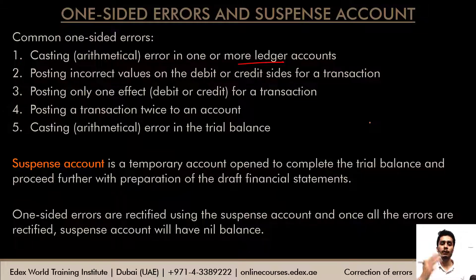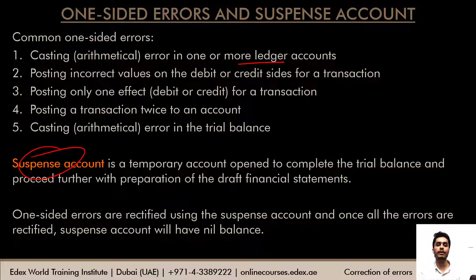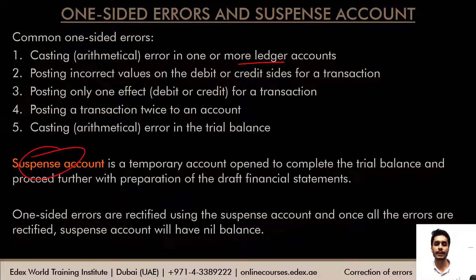When there is a difference in the trial balance, you can't leave it as it is — you need to continue and prepare financial statements. So a suspense account is opened temporarily to balance the trial balance, allowing draft financial statements to be prepared. As and when errors are found they are rectified, and the suspense account is eventually closed. One-sided errors are rectified using the suspense account because any one-sided error that caused a difference in the trial balance will have a corresponding entry in the suspense account.